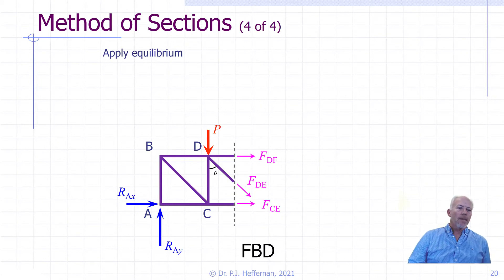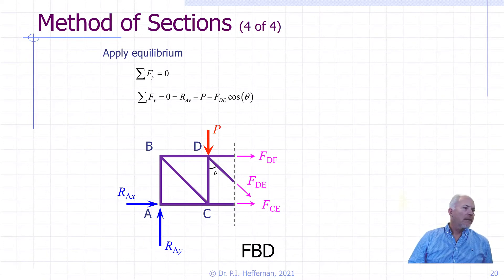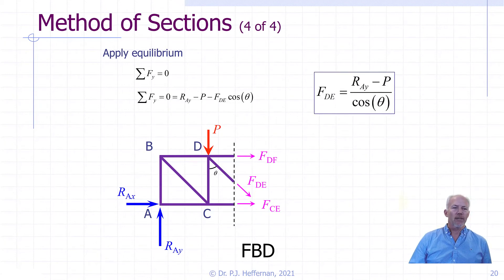In this instance, if we apply the equation sum of the forces in the y direction, it is made up of RAY, P, and the vertical component of FDE. Note that because the force must align with the geometry of the member, there is a known relationship between the x and y components of the force based on the geometry of the member. For theta shown, the vertical component of force DE would be FDE cos theta. With just a single vertical unknown, we can solve for FDE. We can now use the other equations of equilibrium to resolve for the remaining unknowns if desired.